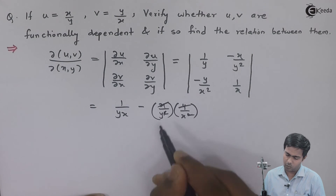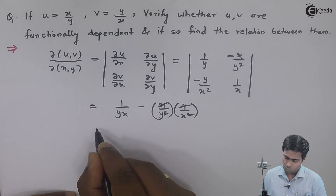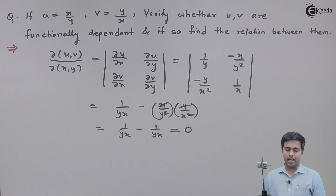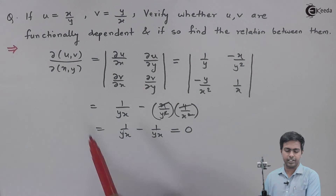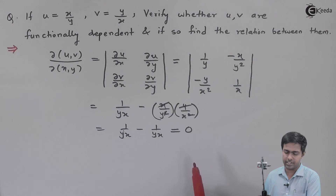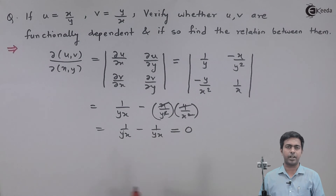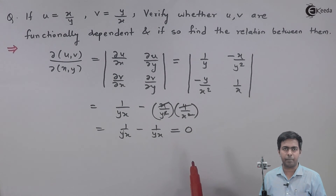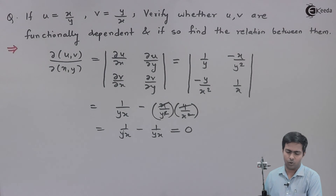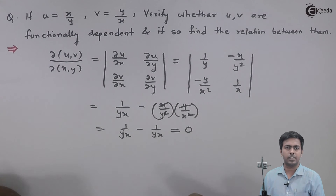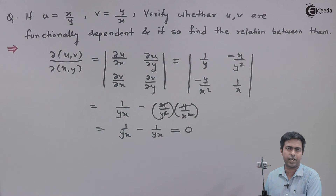After computing the determinant, we get 1/(yx) minus 1/(yx), which is equal to 0. As explained, if we are getting the Jacobian equal to 0, then we say yes, there is a dependency between the two functions u and v. So here the dependency exists. There is no fixed method to find out the dependency, but by using algebra and some mathematical simplification we can definitely find out the relationship between u and v.